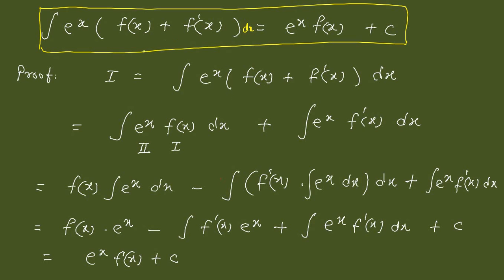Let us prove why this is so. Starting from the left-hand side, we have the integral of e^x[f(x) + f'(x)]dx. I simply multiply through and split it into two integrals: the first is the integral of e^x·f(x)dx, and the second is the integral of e^x·f'(x)dx. I will not do anything with the second one, and I apply integration by parts to the first.